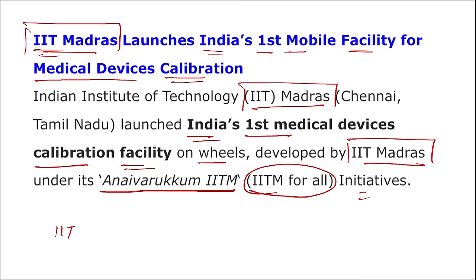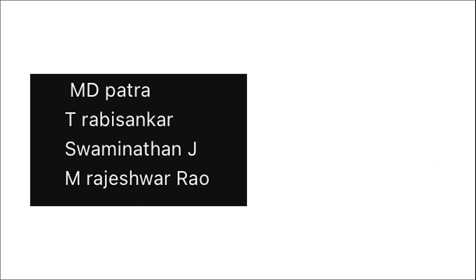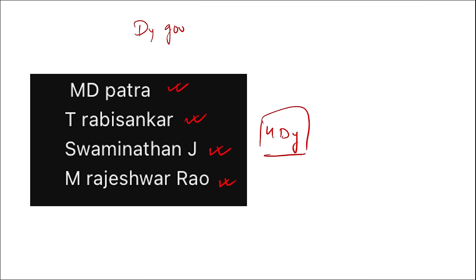IIT Kharagpur was established in 1951 and declared an institute of national importance in 1956. As of November 2023, India has a total of 165 institutes of national importance. Also, a correction from yesterday: the four Deputy Governors of RBI are MD Patra, T. Rabi Shankar, Swaminathan J., and M. Rajeshwar Rao. Please correct your notes accordingly.